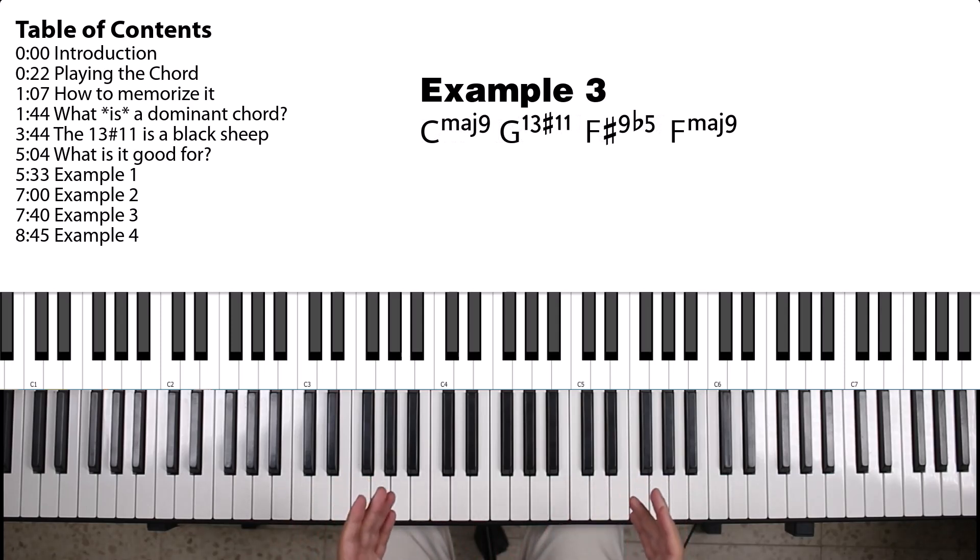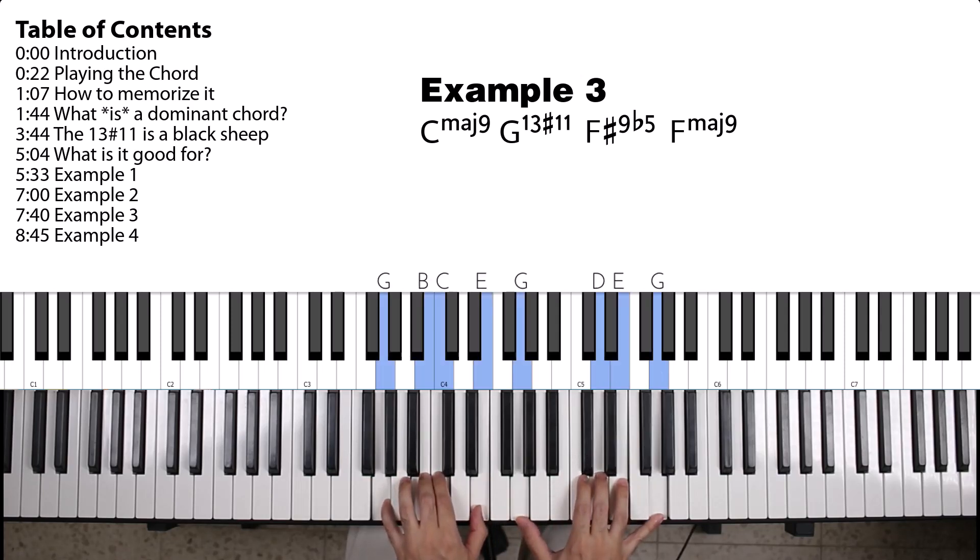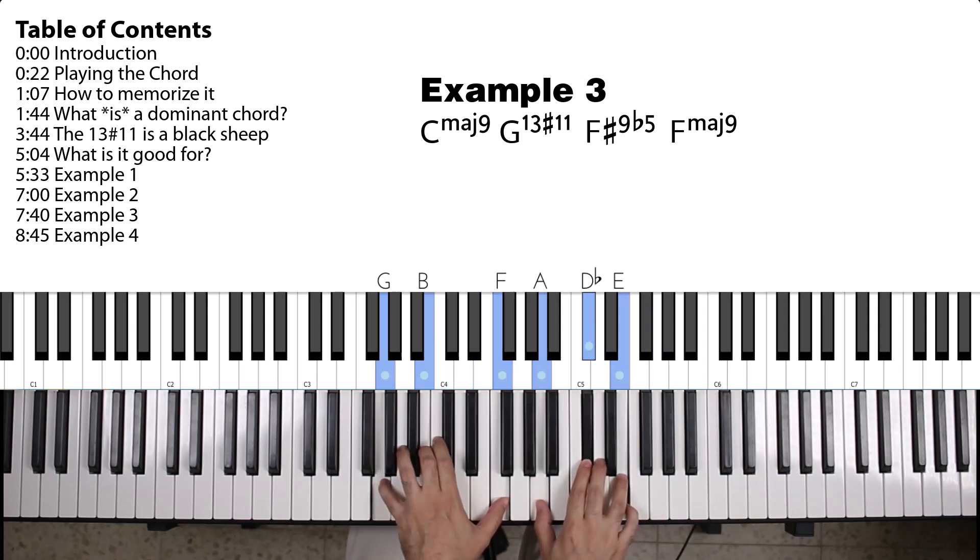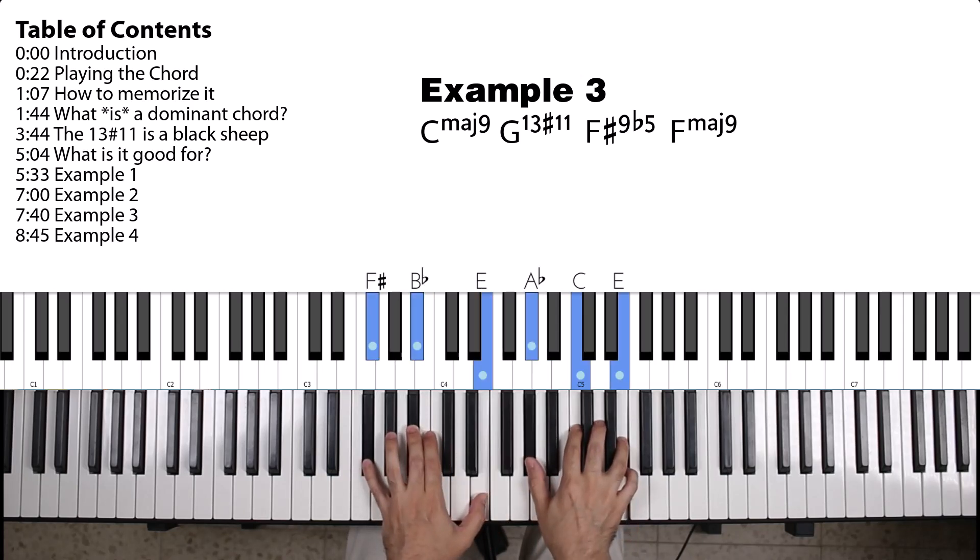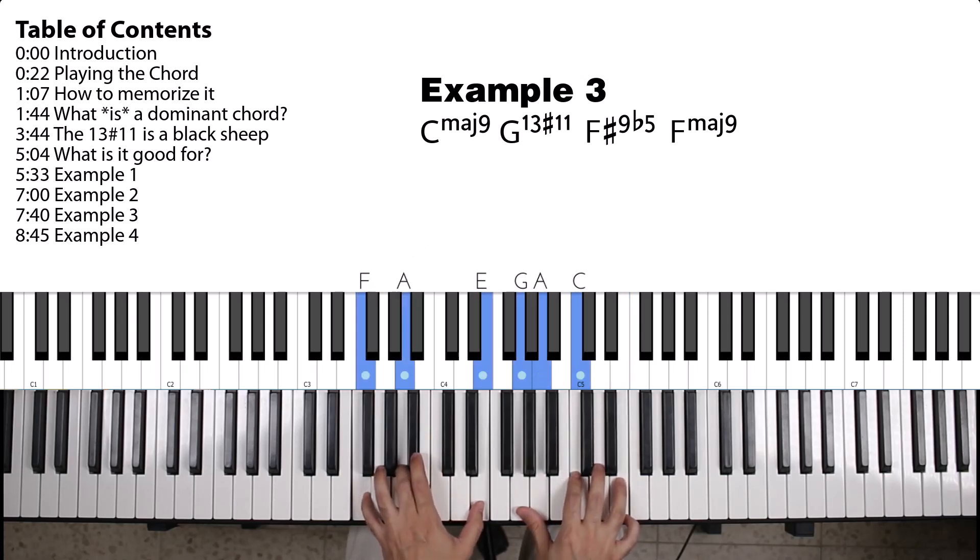I'll conclude with one more example. And in this case, I'll start with the C major 9, and I'll go to the G13 sharp 11, which would chromatically move down to an F sharp 9, with the sharp 11, by the way, to an F major 9.